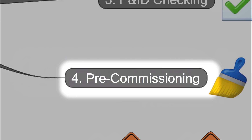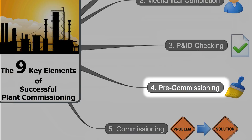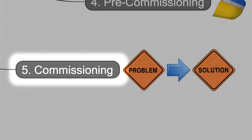The fifth key element is commissioning. This step includes, for example, introduction of utilities, dry running trials, hot running trials, safe fluid dynamic testing, solvent dynamic testing, and process fluid tests. Now we will face a lot of problems to be solved before key element number 6.